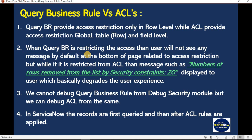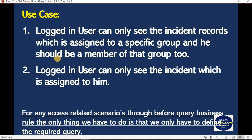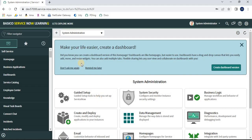Let's implement some use cases practically to better understand how query business rule works. The first use case is: the logged-in user can only see incident records assigned to a specific group, and he should be a member of that group. The second use case is: the logged-in user can only see the incidents assigned to him. Let's navigate to the ServiceNow personal developer instance.